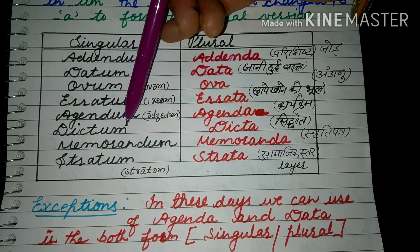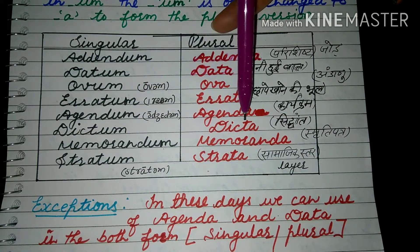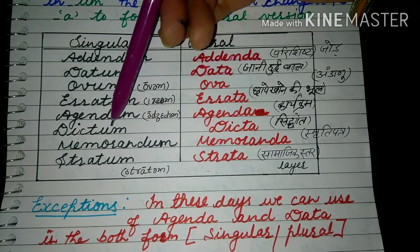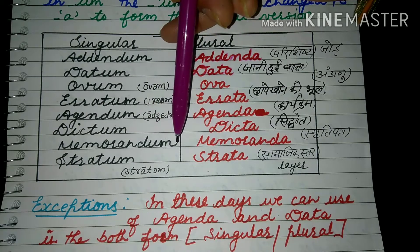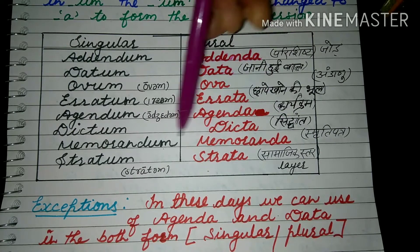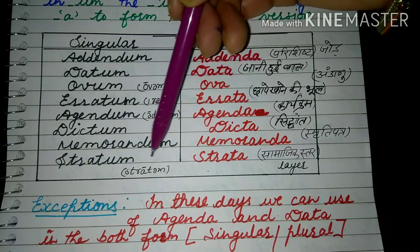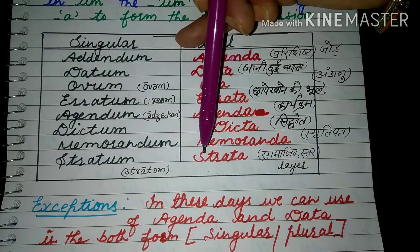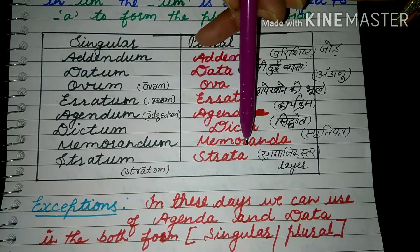Next is 'dictum' — its plural is 'dicta'. Another word is 'memorandum', meaning a memorial letter or note made in someone's memory — its plural is 'memoranda'. Another word is 'stratum', meaning a layer — social layer or other layers — its plural is 'strata'.